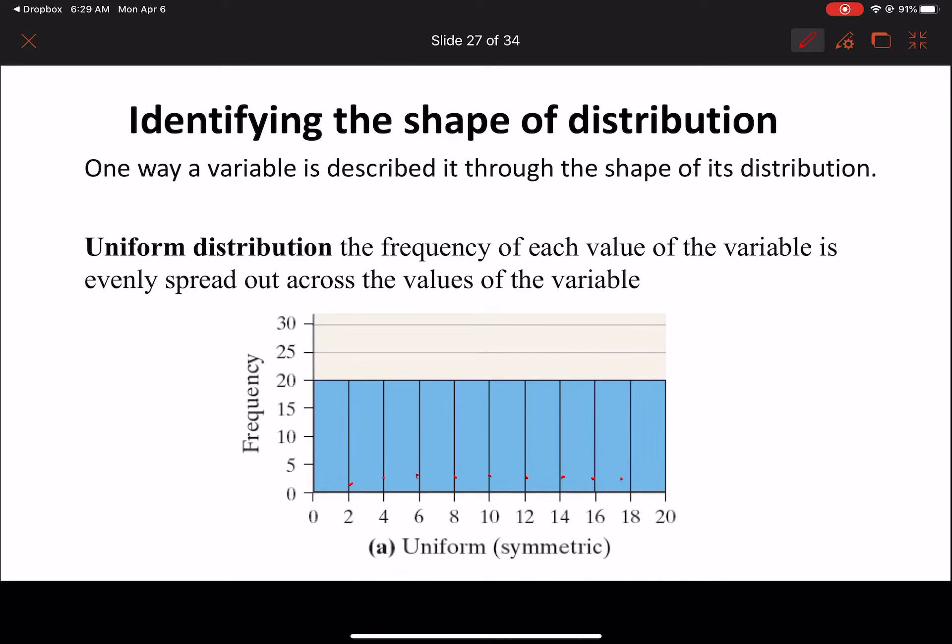So the frequency of each one, whatever this is, it occurs 20 times. Each one occurs 20 times. So the frequency of this variable for each value is the same. So this is called a uniform distribution. When it looks like a rectangle, it is a uniform distribution.